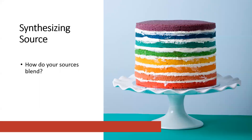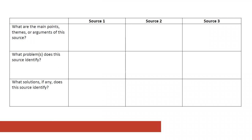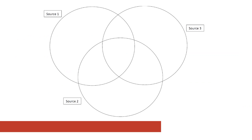Now that you've found and selected your sources, you have to think about actually using them. Before you start writing, it can be helpful to sit down and work out how all of your sources work together — essentially how you can blend your sources to create your argument. First, create a simple chart where you can list out the main points in each source, the problems it discusses, and the solutions offered. Then, to make sure these sources work together, you can blend things in something like a Venn diagram. This will help you see where the sources overlap, identify similar points or ideas, and decide whether unique points from a single source are important enough to include or whether to skip that resource.